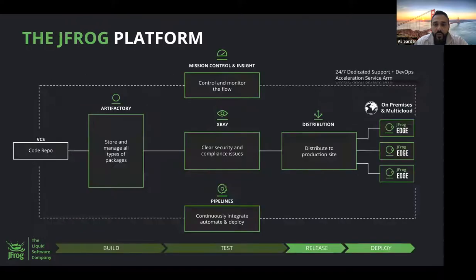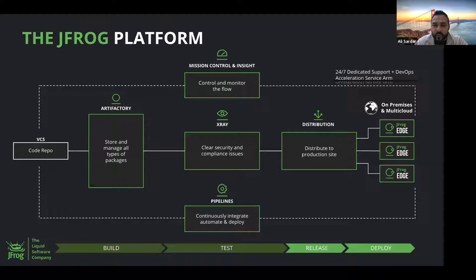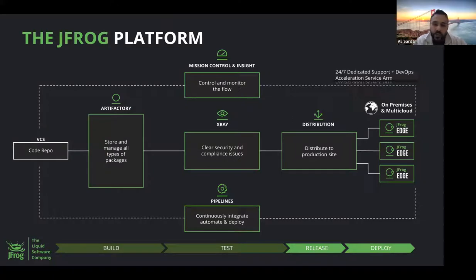If we look under the hood at what constitutes the JFrog platform, you'll see different elements indicated in the green boxes. Everything to the right of your code repository — version control systems like GitHub or Bitbucket — the platform includes everything that allows you to build, test, release, and deploy software at scale.